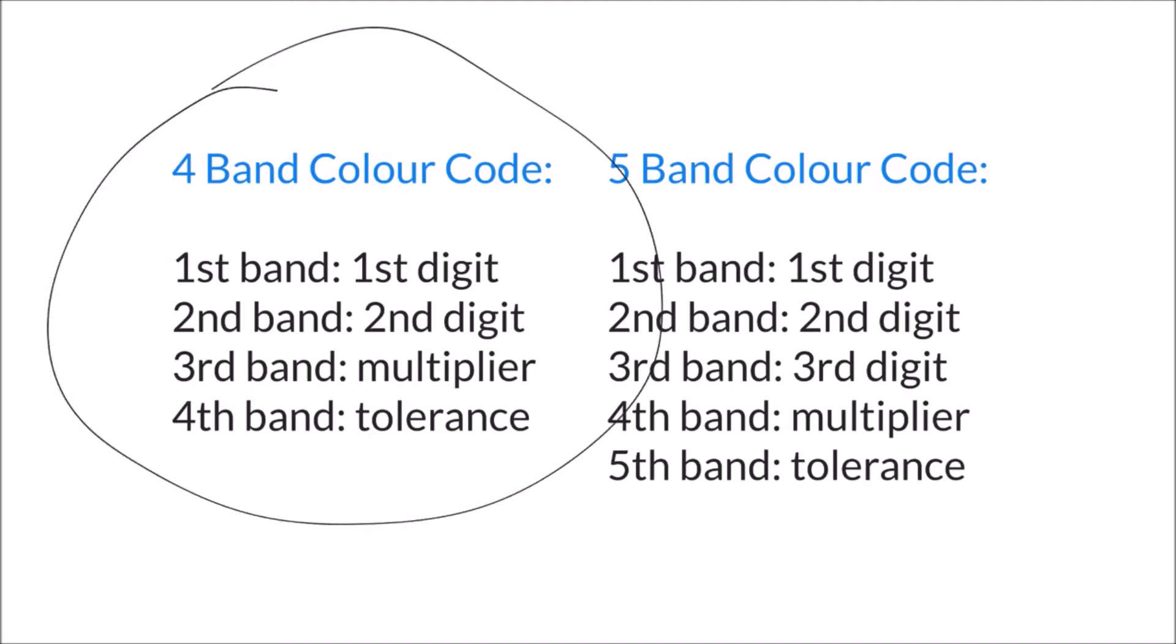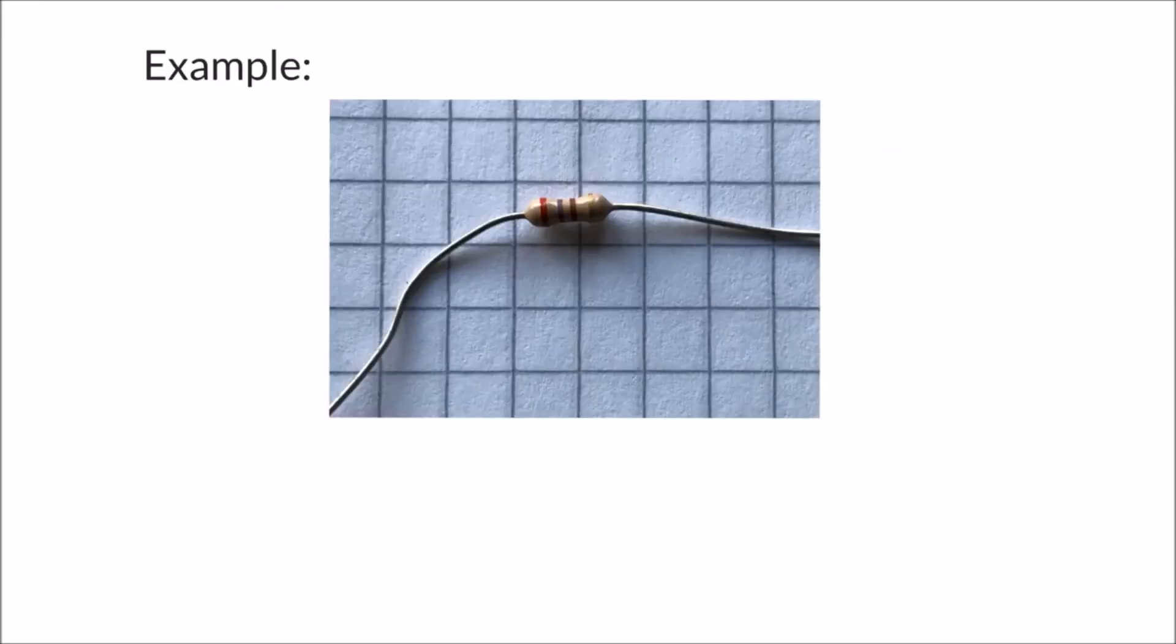Let's have a look at a quick example. Here's the same photograph of our resistor and I want to apply the rules that we looked at on the previous slide to how we can interpret the resistance of this resistor.